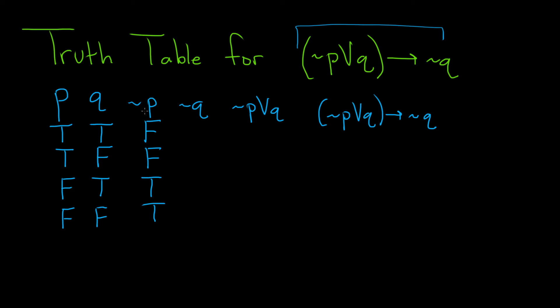For not Q, it's the same thing. We just negate all of the truth values. True becomes false, false becomes true, true becomes false, false becomes true.